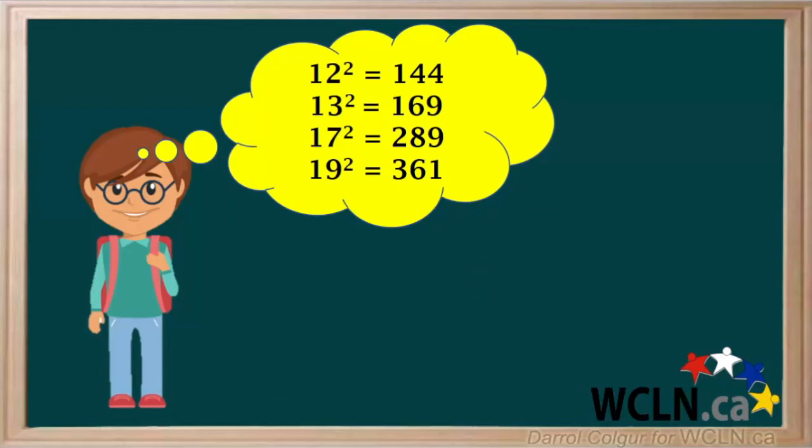Let's have a look at Matt. He has memorized the perfect squares of many numbers, such as 12 and 13. So he knows that 12 squared is 144, and 13 squared is 169, for example.